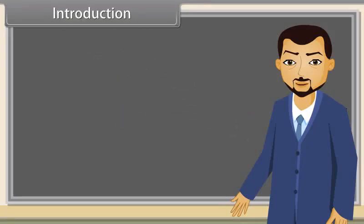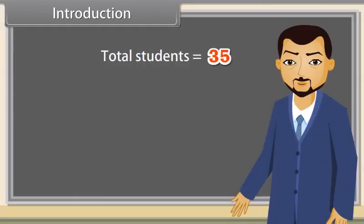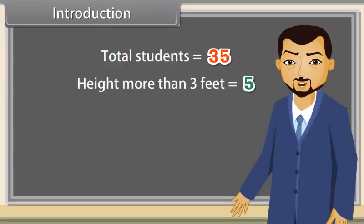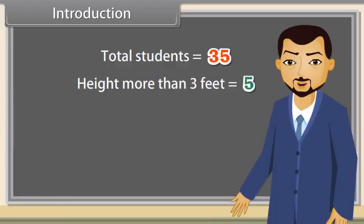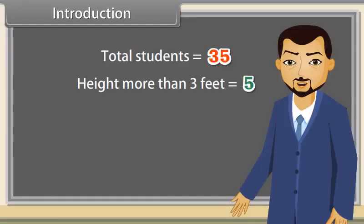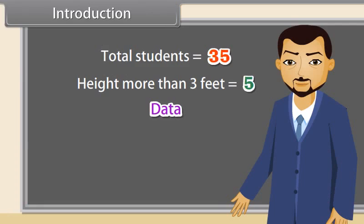Introduction: How many students are there in the class? Thirty-five. How many students have height more than three feet? There are five students. And how many girls are here? There are many girls. Do you know why I am asking these questions? I am taking data of your class. Data? Yes, and today I will explain everything about data. Come, let's start.